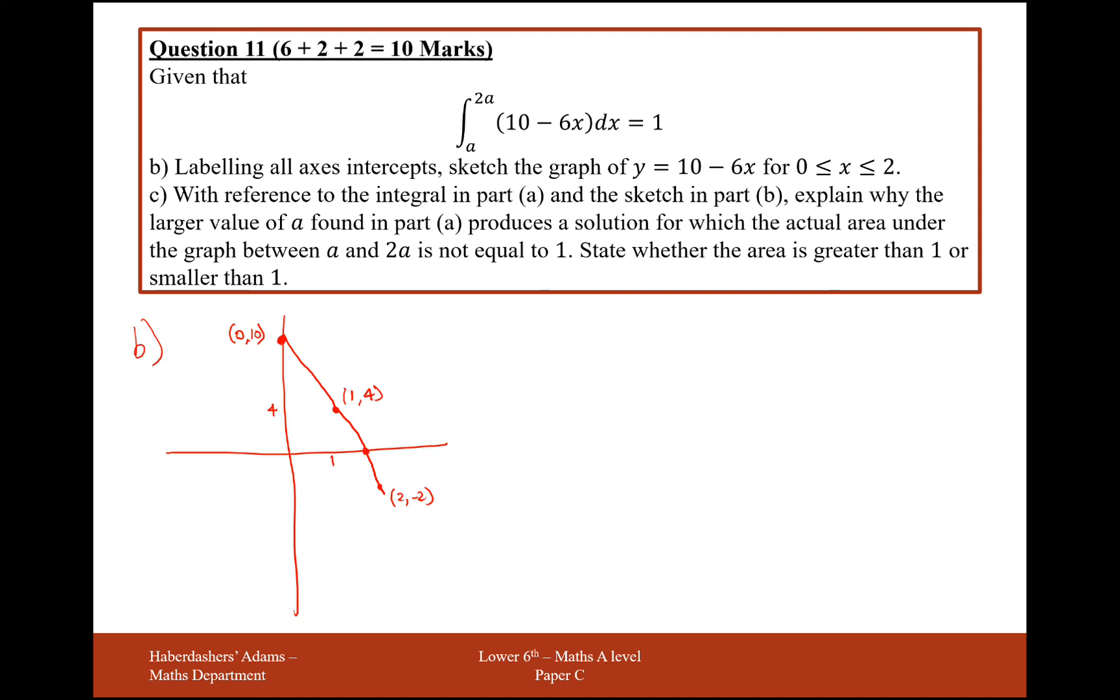Label all axis intercepts. So we need to label this intercept here. So that's when the y coordinate will equal 0. So 10 minus 6x equals 0, so 10 must equal 6x. So 5 over 3 is the value for x here, or in other words 1.6, 5 over 3, 1.6 recurring, 0.